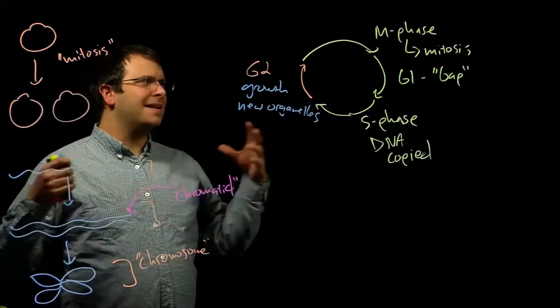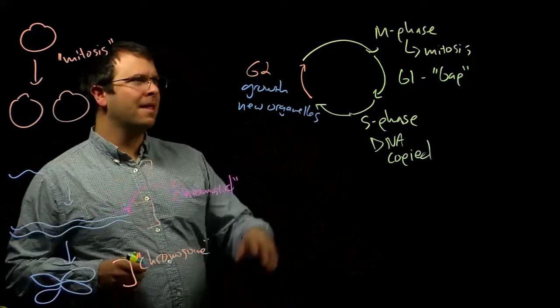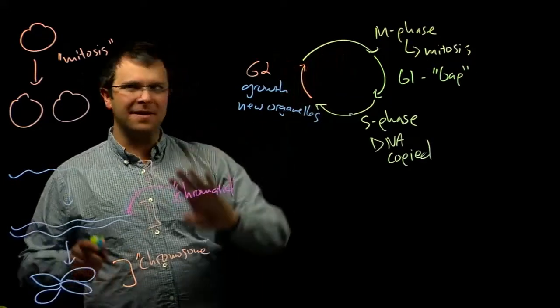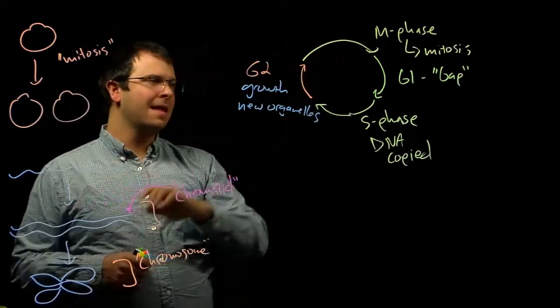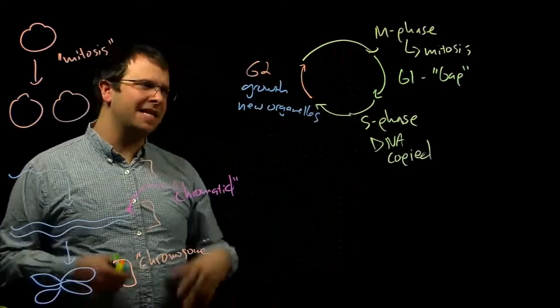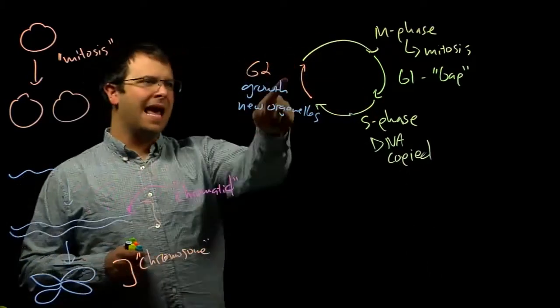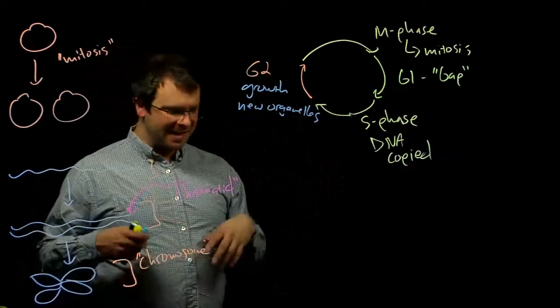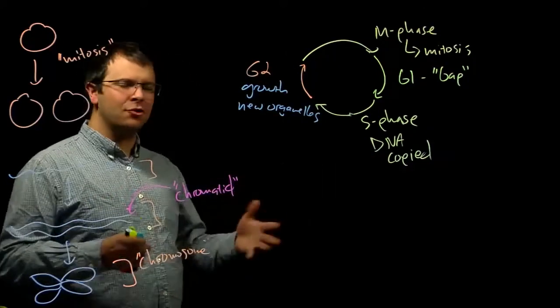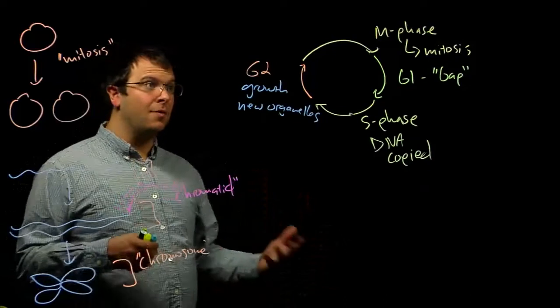And so now that we've gotten the 10,000 foot view from M phase where the cell is actually dividing, G1 phase is a quiescent phase, a gap phase, the S phase where the DNA is being copied, and G2, another quiescent phase where the cell is growing and getting ready to divide, let's go ahead and take a closer look at M phase.